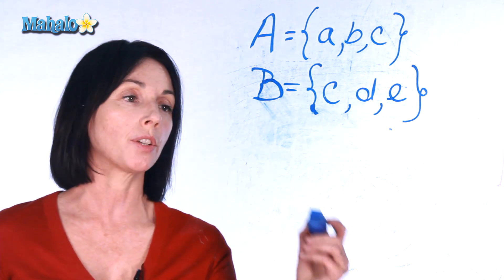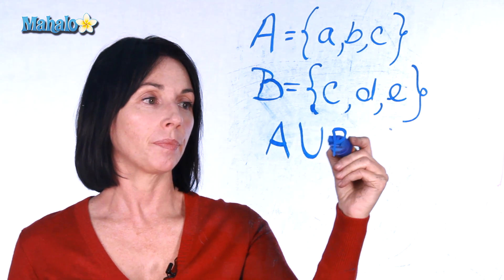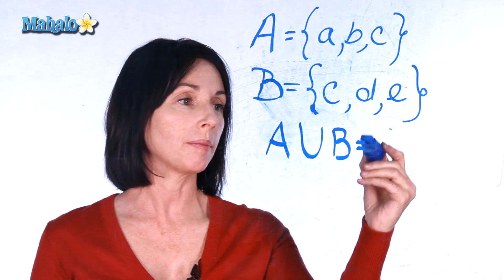So this is the notation for it. A union B means that we take all the elements in A and all the elements in B and we make a new set.